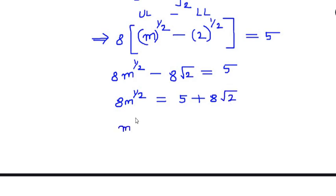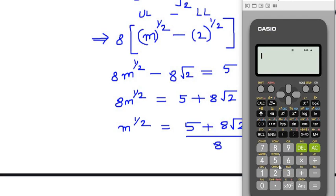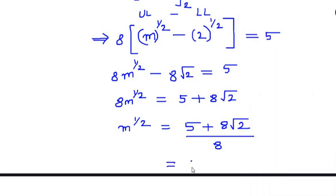So m to the power of half becomes 5 plus 8 root 2 divided by 8. Let us see how much we get on a calculator: 5 plus 8 square root of 2. It shows as the same answer. To get it as a decimal you can click on sd, it shows you 2.039. This is m to the power of half.